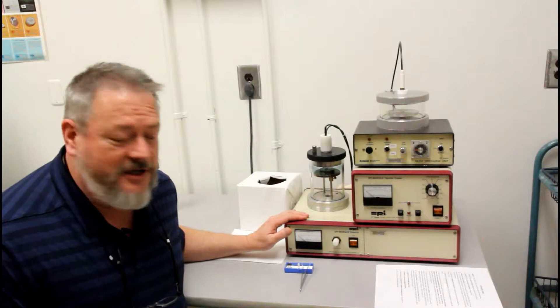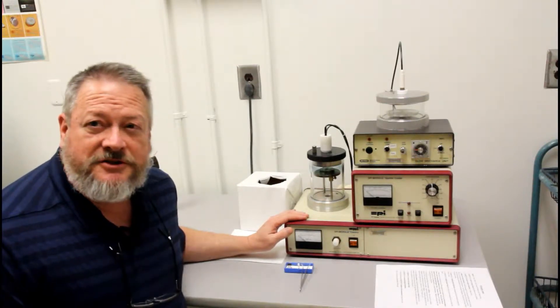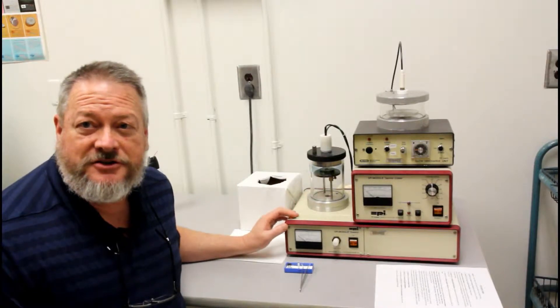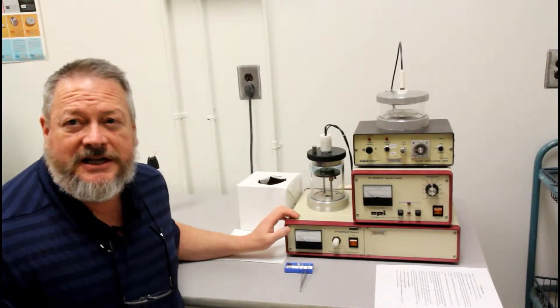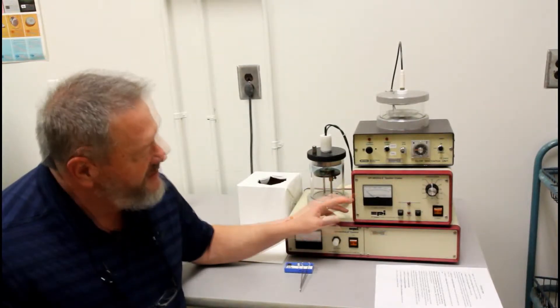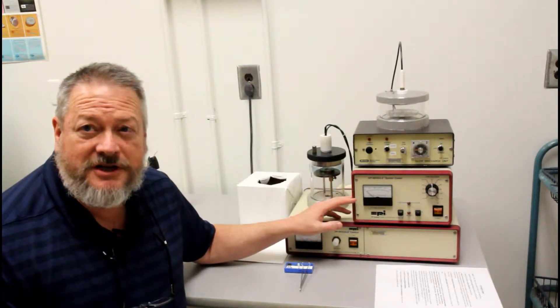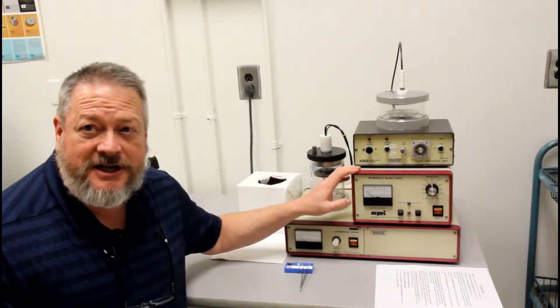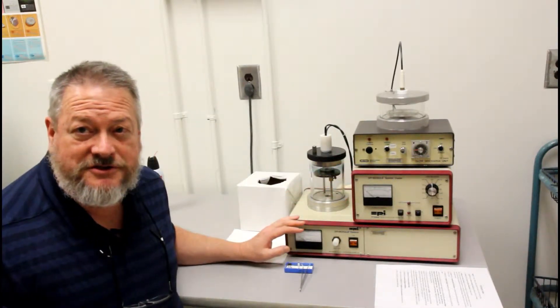At the base we have a module that controls the vacuum pump within the chamber, so you'll turn this on first. Then we have another controller, it's the actual sputter coater head, and this will only be turned on and energized once the vacuum gets to a certain level.